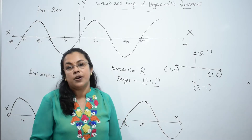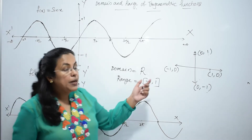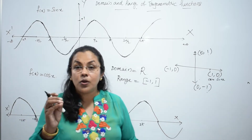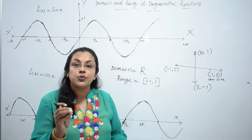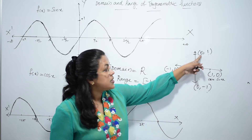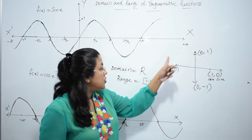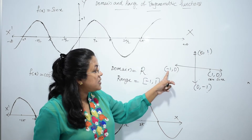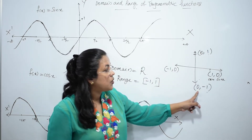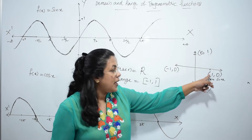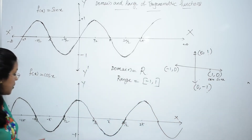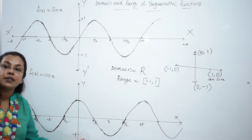Now look at the cosine function. What about the domain and range of cosine function? We know the values: cos 0 is 1, cos 90 is 0, cos 180 is minus 1, cos 270 is 0, and cos 2π is again 1 and so on. If we draw the graph of cosine function, it will look like this.